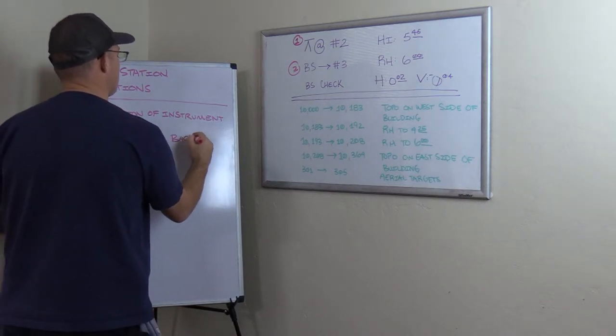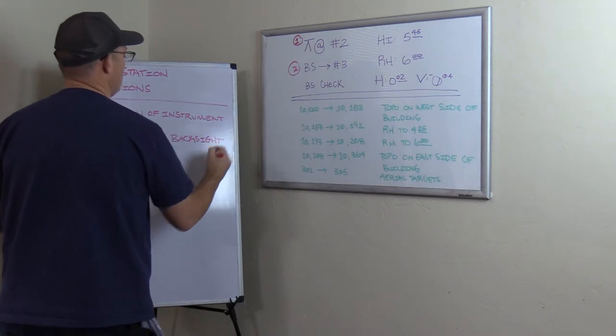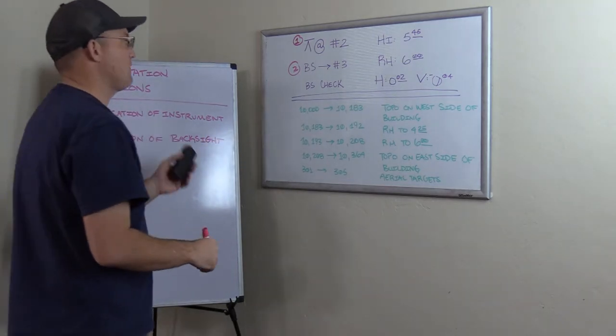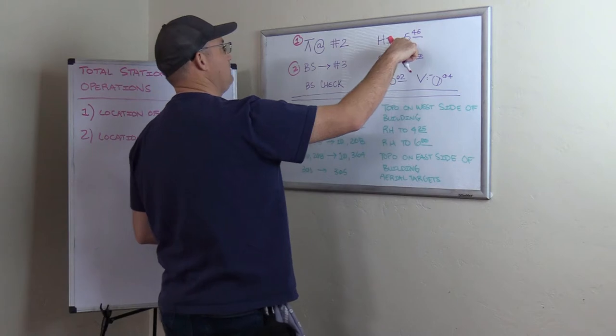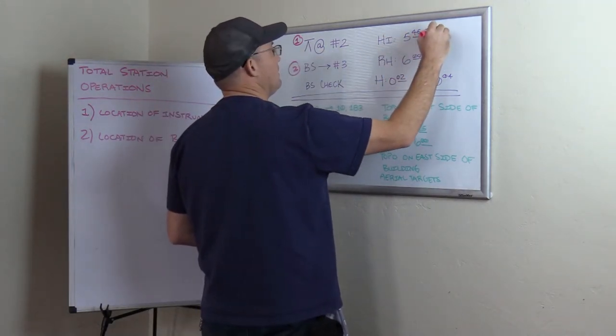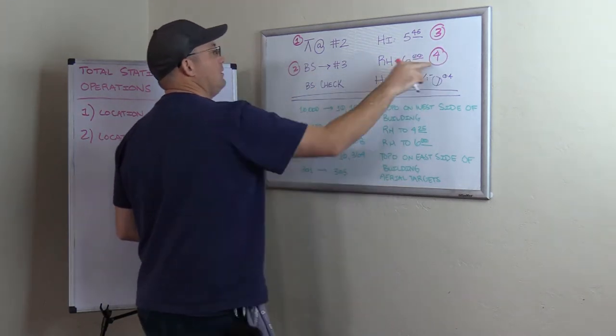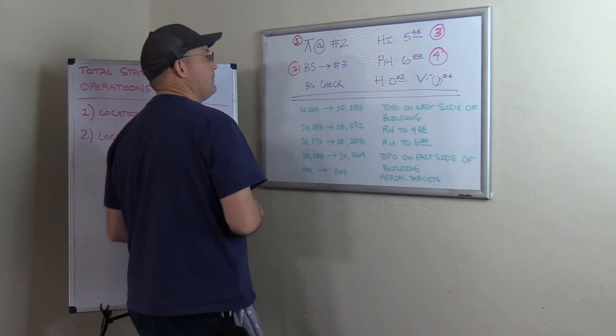Now to get our elevations correct on our total station survey, we need to know the height of instrument. So this is how high the instrument is above control point number two. We also need to know how tall the rod on the back site is. So that's number four.